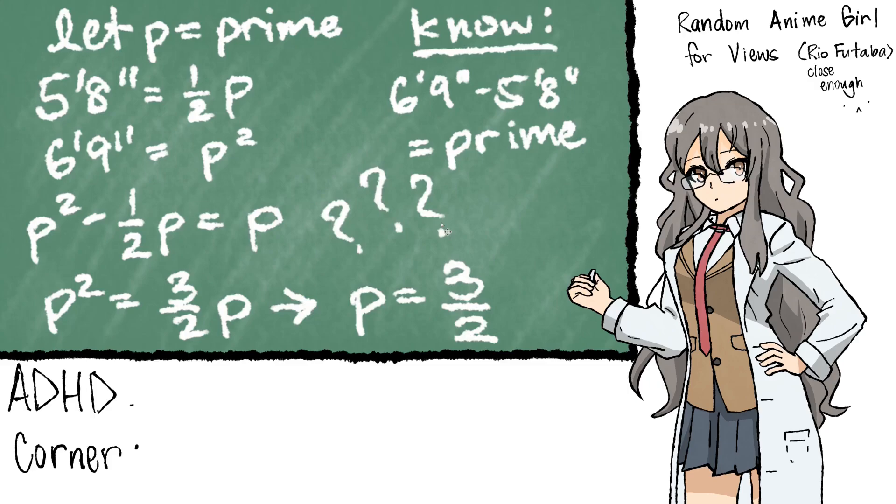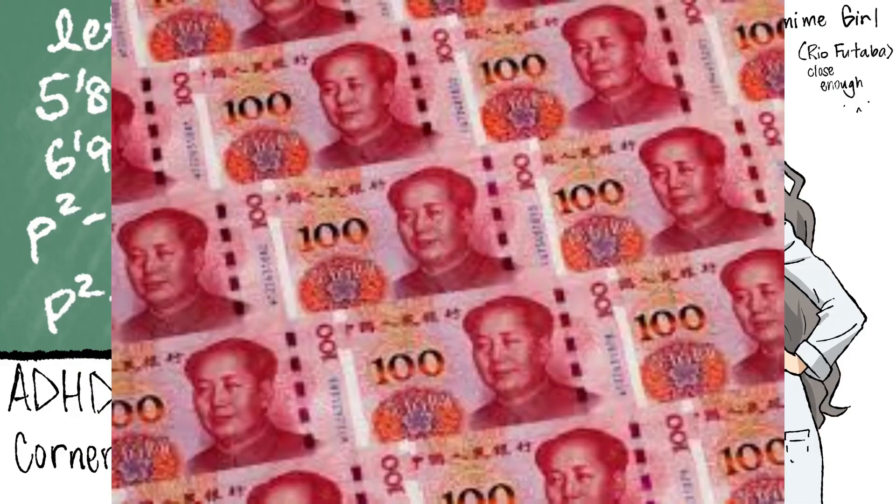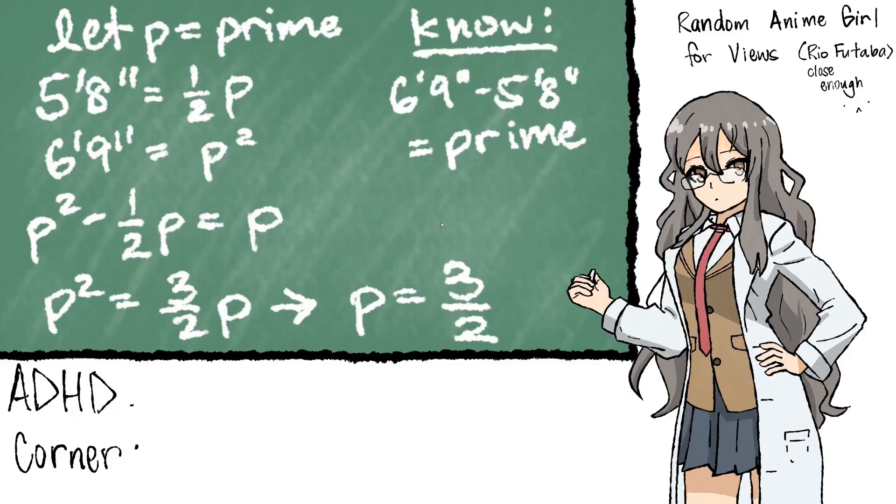But this result doesn't make any sense. 3 halves quarters? Dollars? Yuan? We need units to determine what anything is really worth. So, of course, on this side, we'd have a unit of prime. And the other side of the equation didn't specify, so we'll just call them units for now.